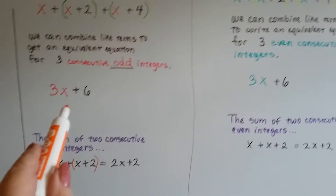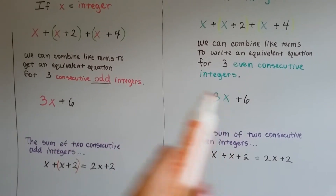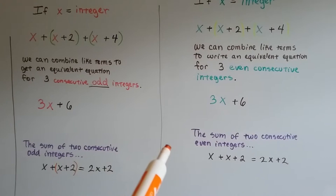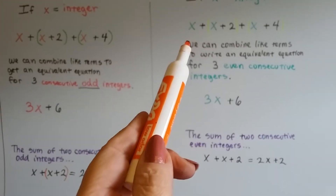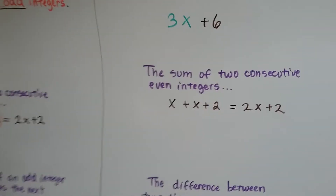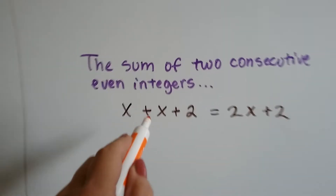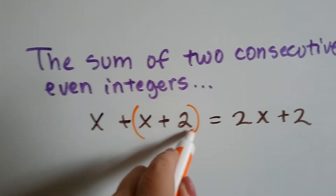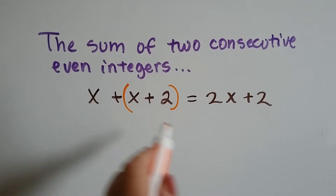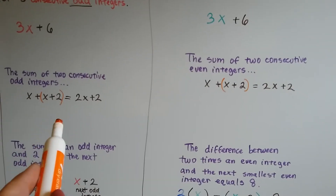So we can do 3x plus 6 for either even or odd to find the next largest consecutive integers as they go up. If we wanted to find them going smaller, then it would be x, then x minus 2, and then x minus 4. The sum of two consecutive even integers is just like the sum of two consecutive odd integers — it's x plus x plus 2, giving us 2x plus 2. It's the same thing whether they're even or odd.